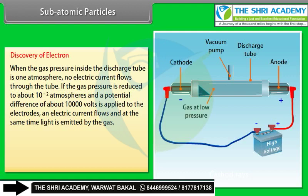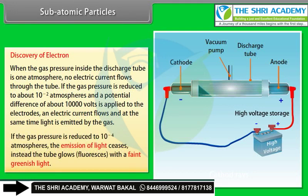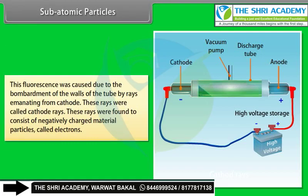If the gas pressure is reduced to about 10⁻² atmospheres and a potential difference of about 10,000 volts is applied, electric current flows and light is emitted. If pressure is further reduced to 10⁻⁴ atmospheres, light emission ceases and the tube glows with a faint greenish fluorescence. This was caused by rays emanating from the cathode, called cathode rays, found to consist of negatively charged particles called electrons.